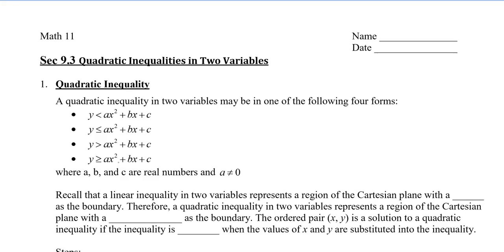Recall that you've actually graphed a linear inequality in two variables before, and remember that is represented by a shaded area in the Cartesian plane with a line as the boundary. A quadratic inequality in two variables also represents a region of the Cartesian plane, but this time drawn with a parabola as the boundary. The ordered pair (x, y) is a solution to a quadratic inequality if the inequality is true when the values of x and y are substituted into the inequality.